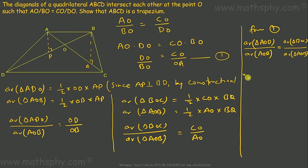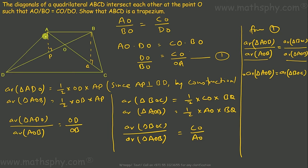Since area of triangle AOD over area of triangle AOB equals area of triangle BOC over area of triangle AOB, we can cancel the common denominator AOB by cross multiplication. At the end, we get area of triangle AOD equals area of triangle BOC.